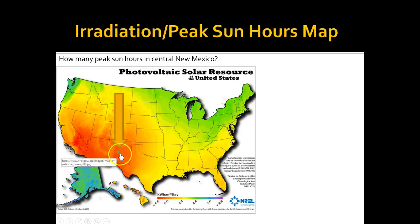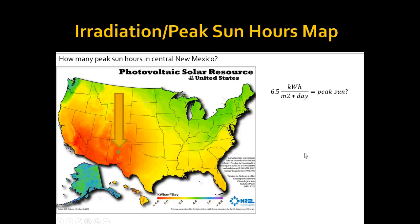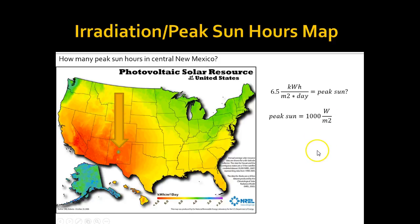So for central New Mexico — if you're not up on your geography, there you are — I'm going to say that's about 6.5 kilowatt hours per meter squared per day, if I zoom in on the legend. So how do I get peak sun from that? Well, in this case peak sun refers to STC peak sun, so it's 1,000 watts per meter squared. I'm trying to figure out how many hours per day I'm getting 1,000 watts per meter squared. There's actually a really easy unit conversion, or factor labeling.